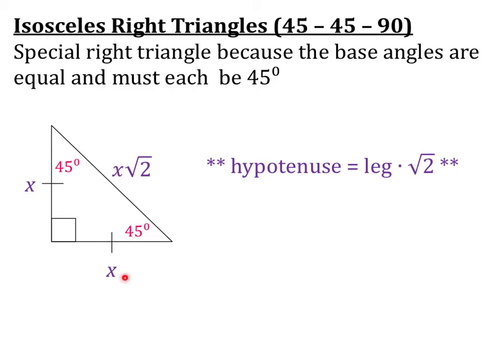So often you will hear x, x, x root 2 when referring to 45-45-90 triangles. You can also think of it in words as hypotenuse equals leg square root of 2.